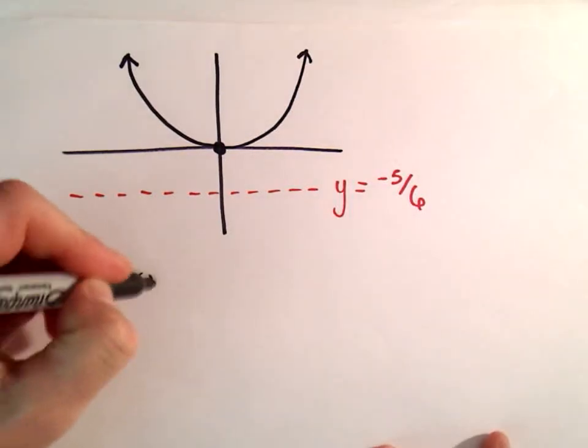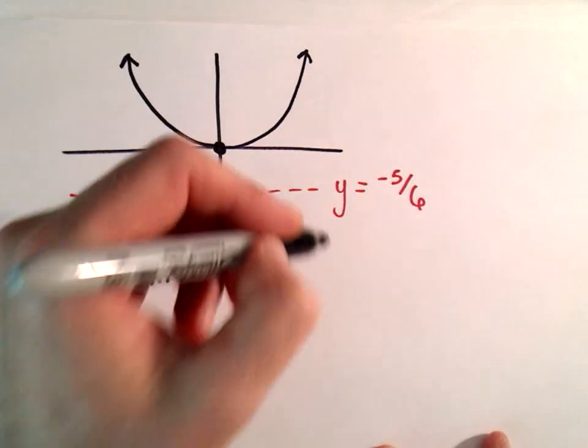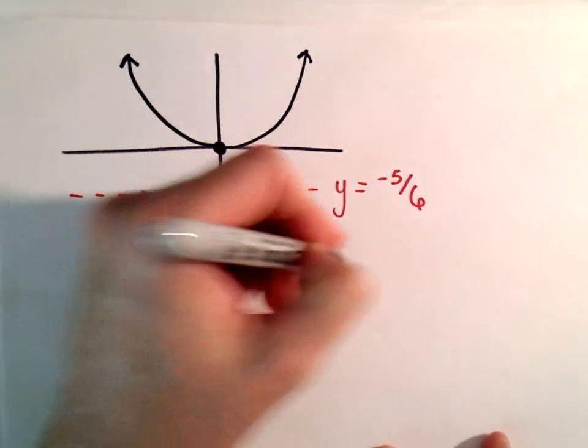So again, the basic form that we are trying to fill in, we have x squared equals 4p times y.